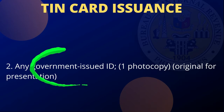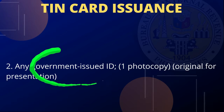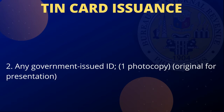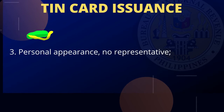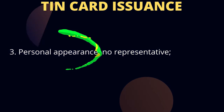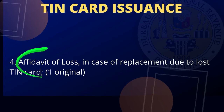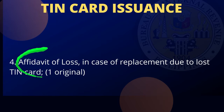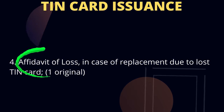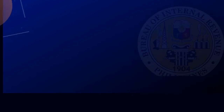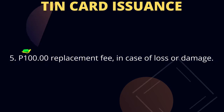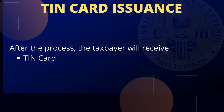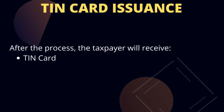Two, any government-issued ID, one photocopy — original for representation. Three, personal appearance — no representative. Four, affidavit of loss in case of replacement due to lost TIN card, one original. Five, one hundred pesos replacement fee in case of loss or damage. After the process, the taxpayer will receive the TIN card.